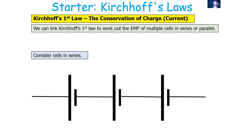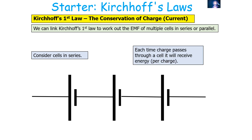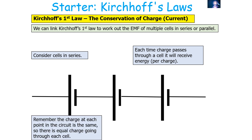We can link Kirchhoff's first law — the conservation of charge or current — to work out the EMF of multiple cells in either a series or parallel configuration. Let's firstly consider cells in series. Each time charge passes through a cell it will receive an energy per unit charge from that cell. The charge at each point in the circuit is the same, so there's an equal charge going through each cell at once.